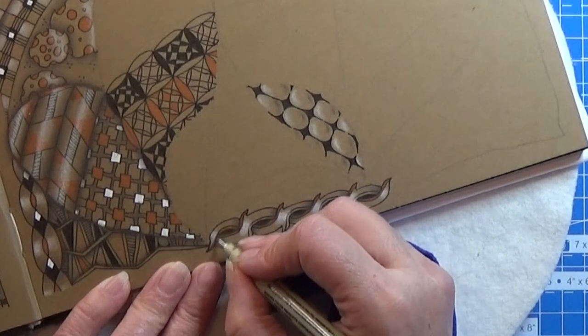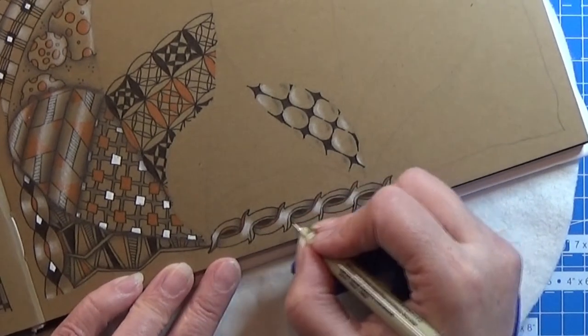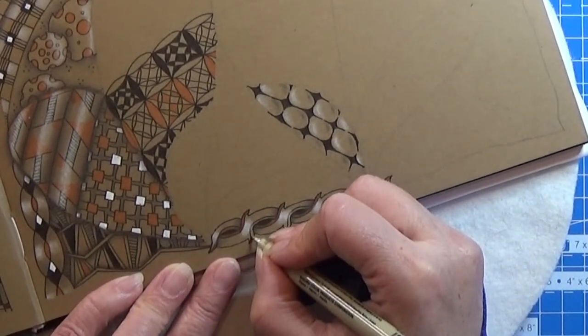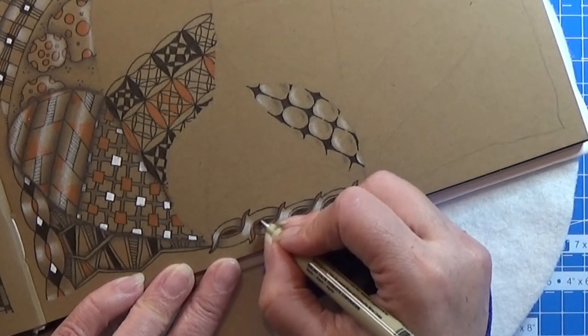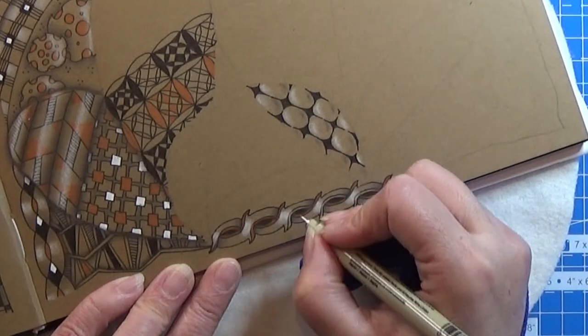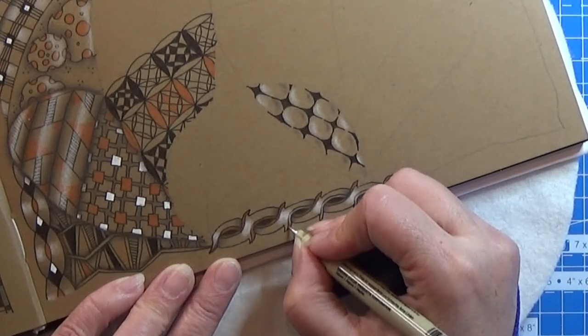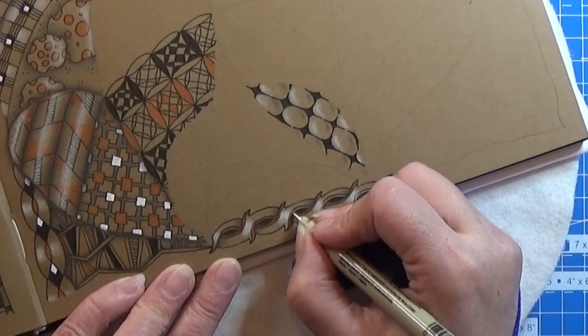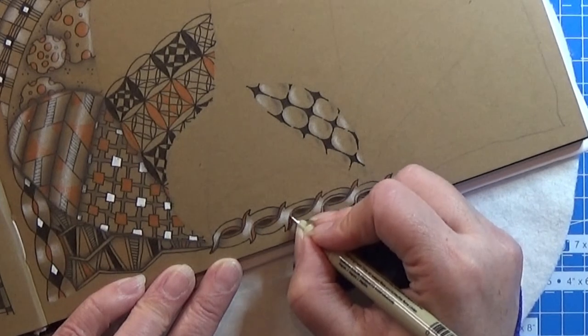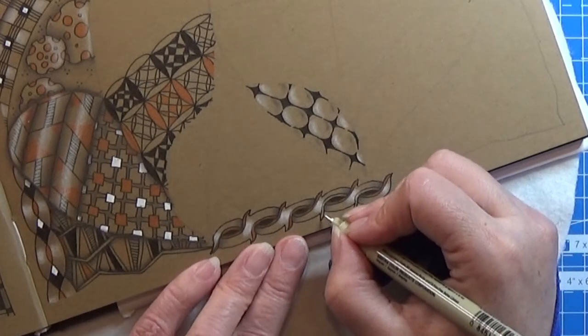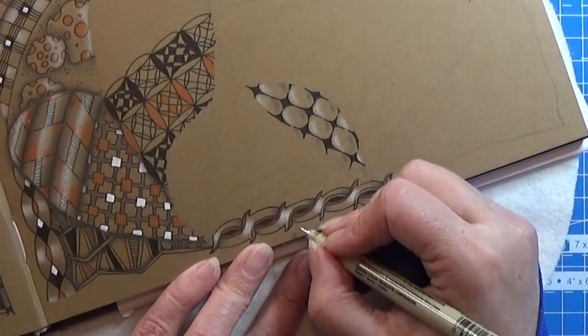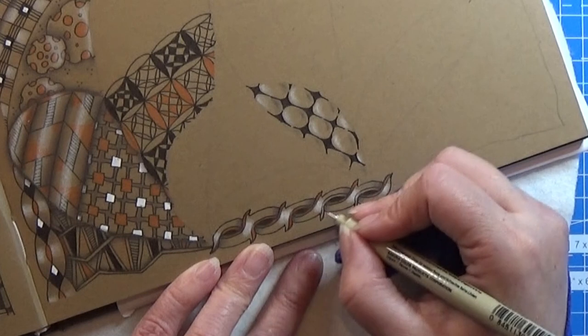And if you're using a color where the shading is disappearing when you are drawing over the shading, then just wait for the ink to be dry and then shade it one more time. That will work as well. But normally I'm going to shade as the last thing on a tangle because then the shading will be on top.